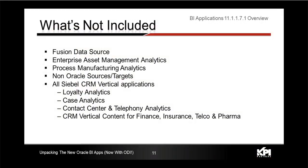So what's not included in this new release? You cannot extract data from a Fusion data source. Enterprise asset management analytics, available as 7.9.6 content, is not available in the newer version. Process manufacturing is not supported. It is only supported on Oracle databases where both source and target are Oracle databases. CRM vertical applications are not currently supported within this version.